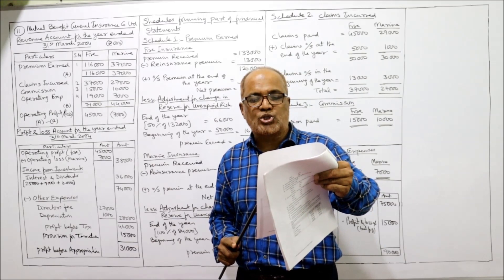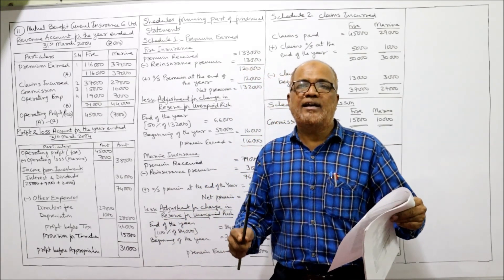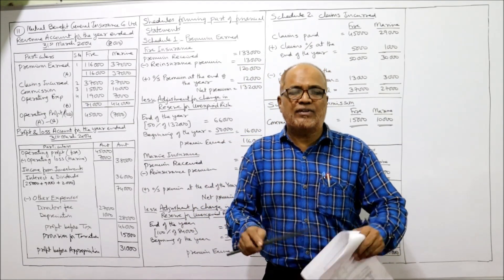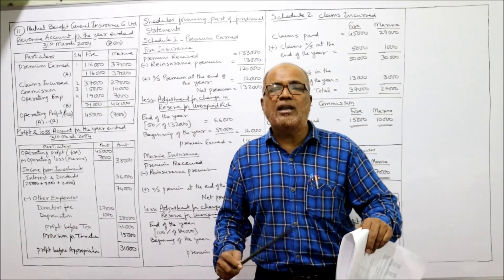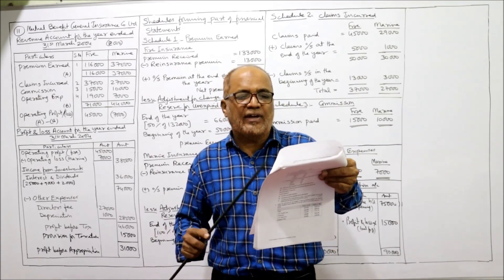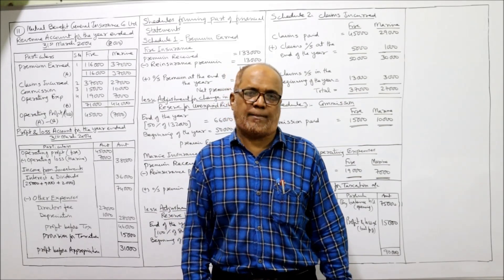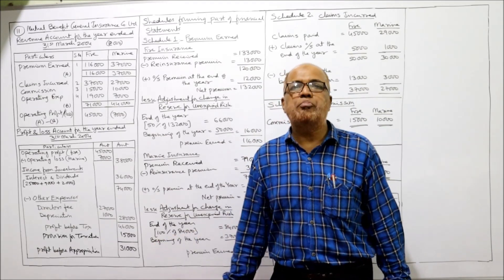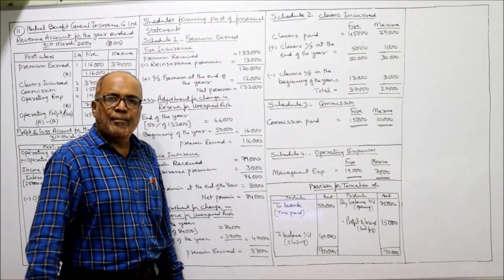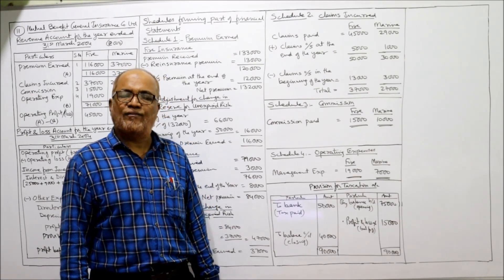31st March 2004 means end of the year — the directors want provision for taxation to be 40,000. So: opening provision at beginning of year is 75,000, income tax paid during the year is 50,000, and provision to be kept at end of year is 40,000. Using this data we have to find out how much provision for taxation to be charged to profit and loss. We prepare a Provision for Taxation Account to find that balancing figure.